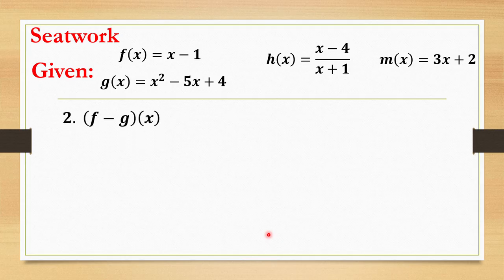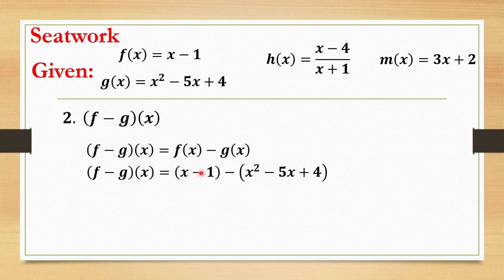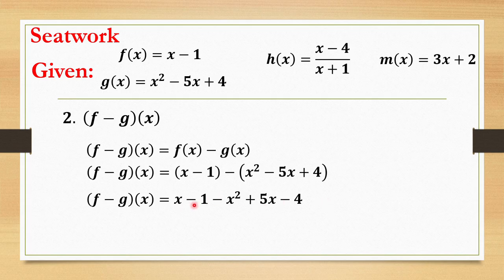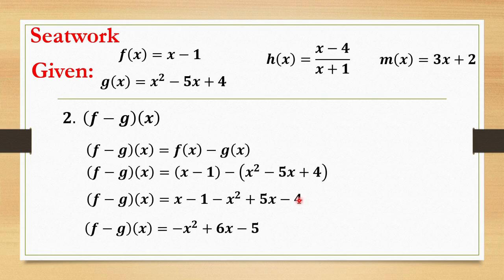So we have f minus g of x. We have f(x) negative of g(x), so we have x minus 1 minus (x squared minus 5x plus 4). That becomes x minus 1 minus x squared plus 5x minus 4 — because ito ay negative, kaya change natin lahat ng sign. So the like terms combine: we have negative x squared, positive 6x, and negative 5. So the final answer for number 2 is negative x squared plus 6x minus 5. I hope na nakuha ninyo yung ating sagot.